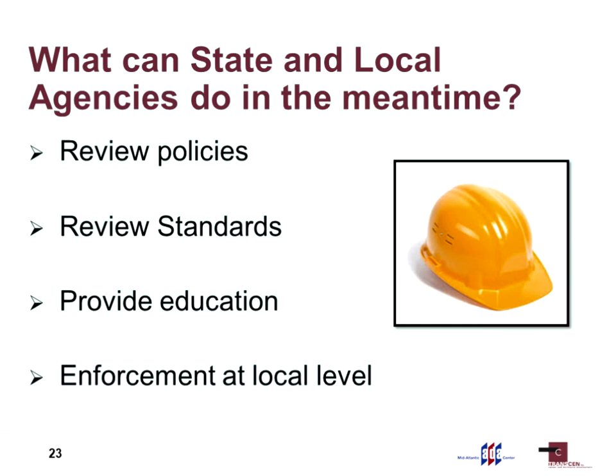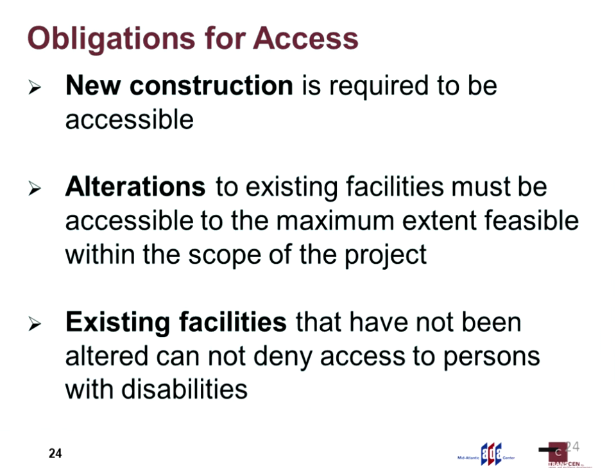The Americans with Disabilities Act and all the standards and guidelines have three requirements. New construction has to be accessible. If you have an alteration to an existing facility, it has to be accessible to the maximum extent feasible or practicable within the scope of the project. And existing facilities — even if you haven't altered them in the last 50 years — still cannot deny access to persons with disabilities.